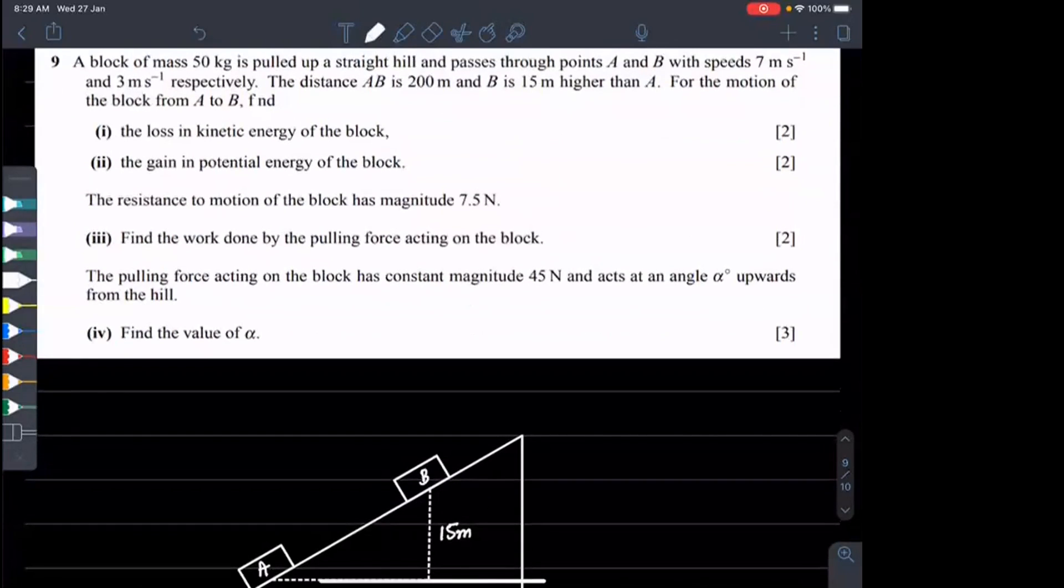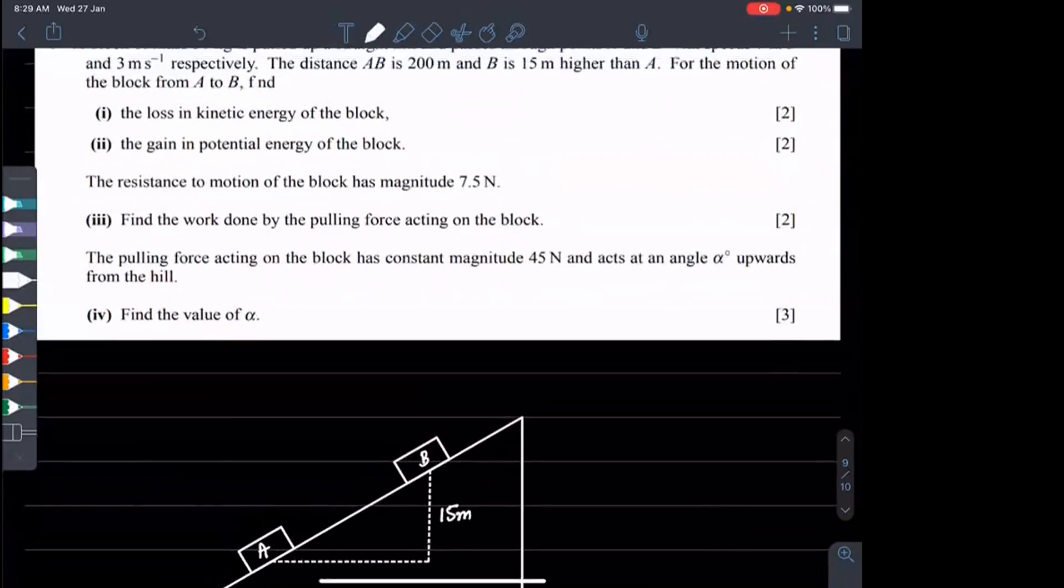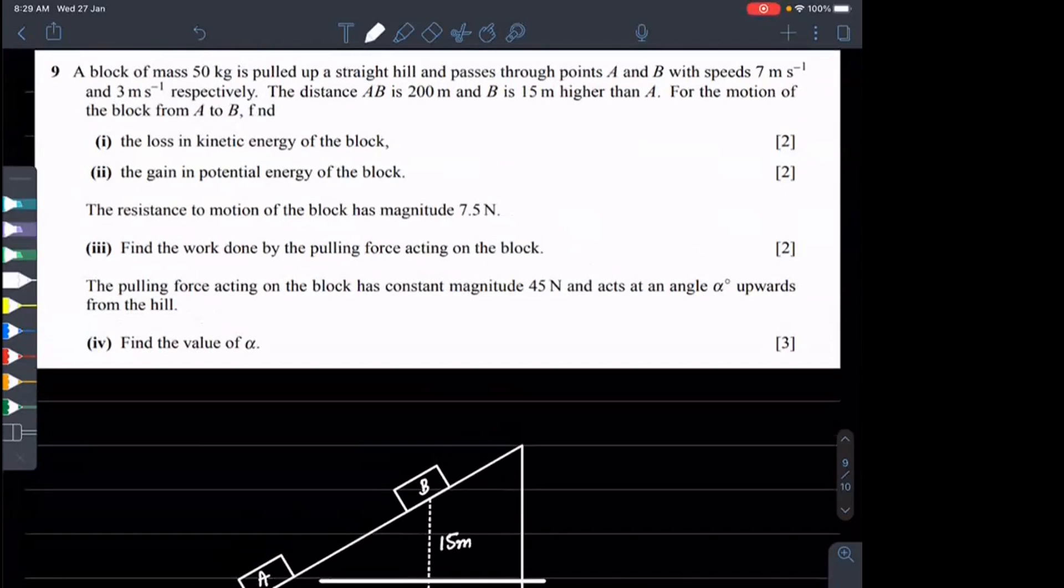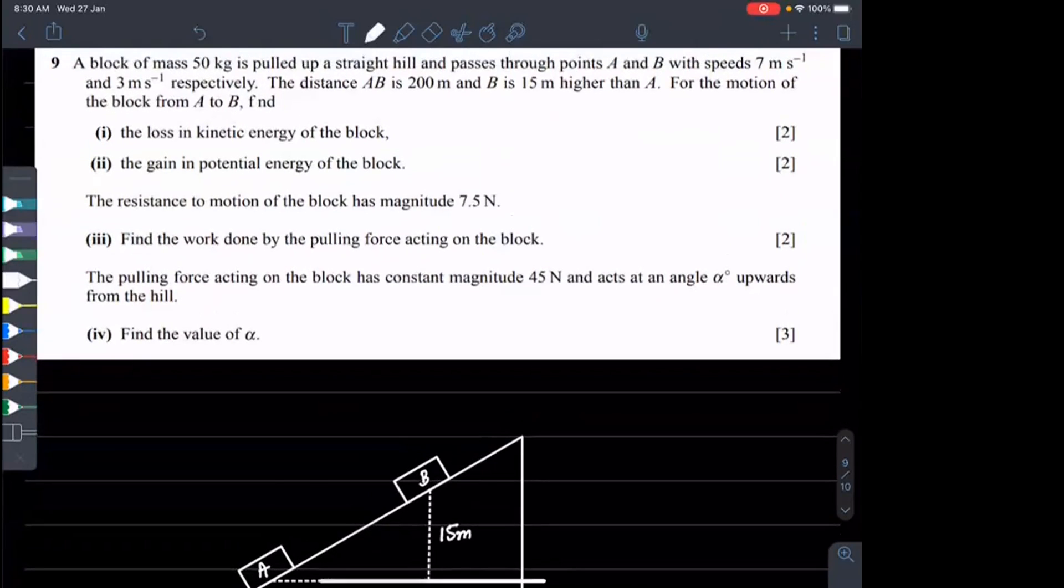So what will we do? We will take the potential energy as zero at A. Remember to keep it, because you can only do this when the ground is at A. The distance A to B is 200 meters distance.